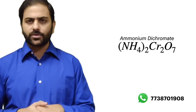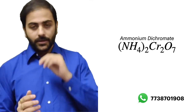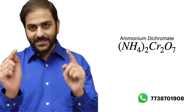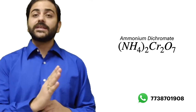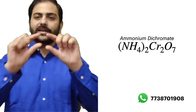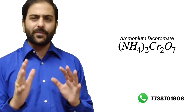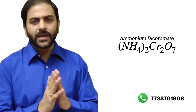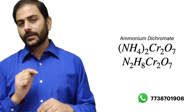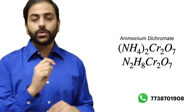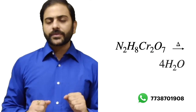Now the third reaction: ammonium dichromate. What is its formula first? The formula is (NH4)2Cr2O7. Now we will heat it. Let's simplify: expanding the brackets gives N2, H8, Cr2, O7 as one big compound.